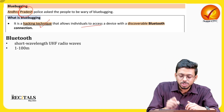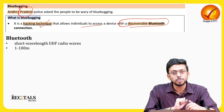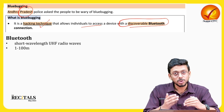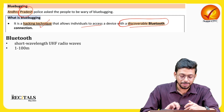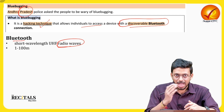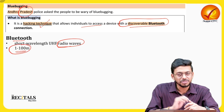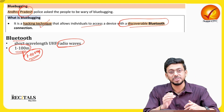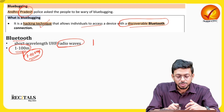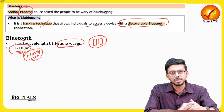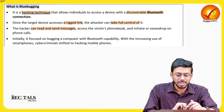Blue bugging allows individuals to access a device with a discoverable Bluetooth connection. If you have a discoverable Bluetooth connection, someone who knows how to do blue bugging can enter your phone and get your data. Bluetooth works on the system of radio waves and generally works within a range of one to one hundred meters. It works on short wavelength ultra high frequency radio wavelength.